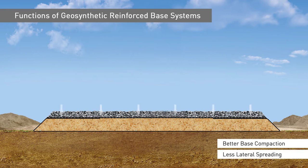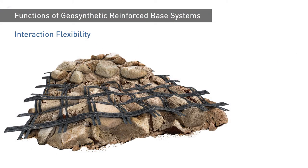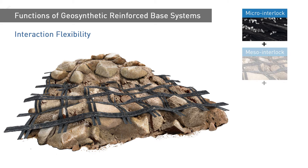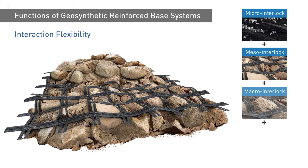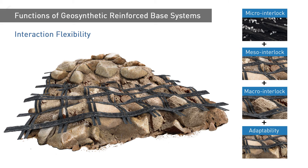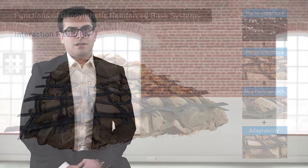The interaction flexibility of woven reinforcement products allows the geogrid to adapt perfectly to the system geometry and to improve the interlocking between the aggregates and the reinforcement. In addition, the interaction flexibility increases the efficiency of the compaction in the reinforced soils. With the mechanical functions of the geosynthetic reinforcements, the stability of the system increases while the rutting depth reduces significantly under identical loading conditions.